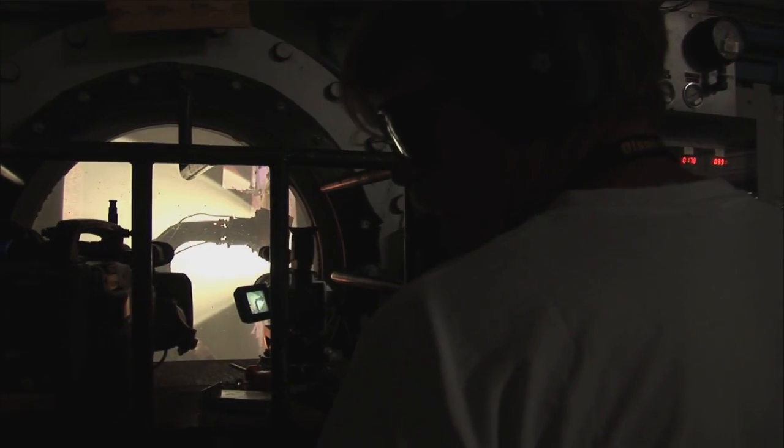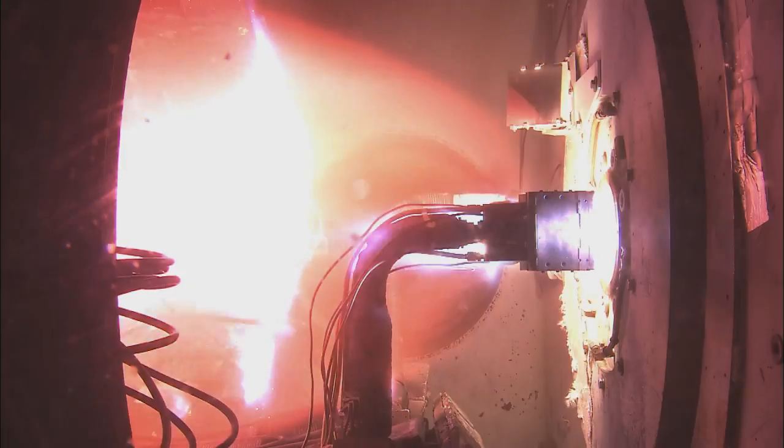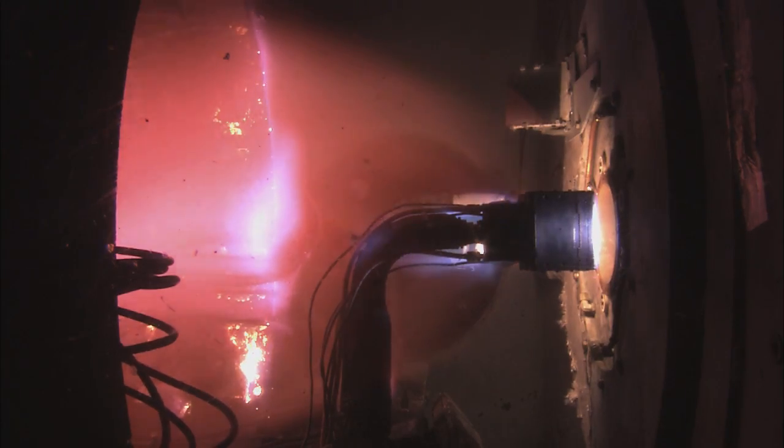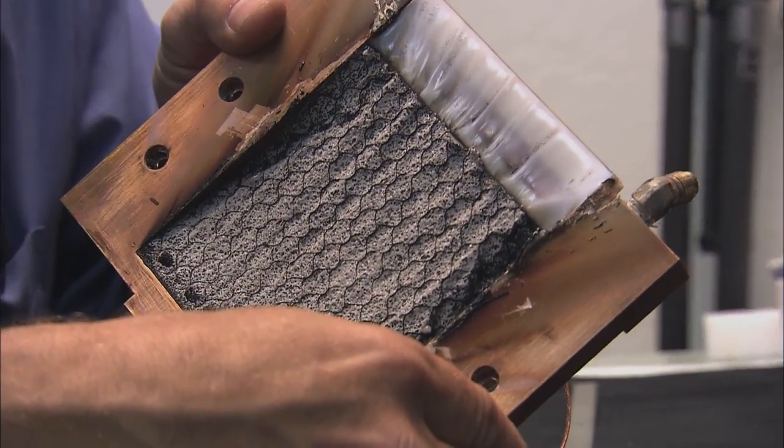PICA-X samples were tested at NASA Ames using special facilities to simulate planetary reentry temperatures and high-speed atmospheric flows. During these tests, the surface temperature of the heat shield material reached approximately 3,450 degrees Fahrenheit, almost twice as hot as molten lava.